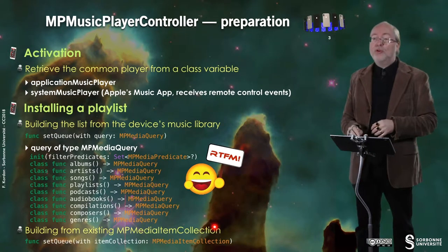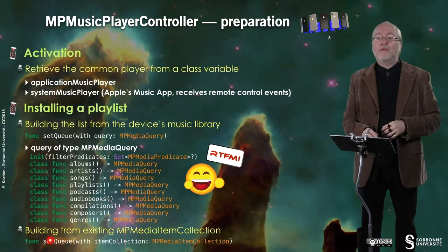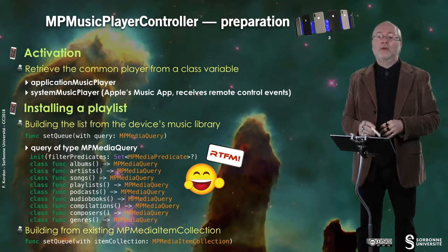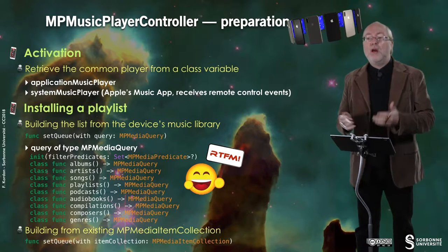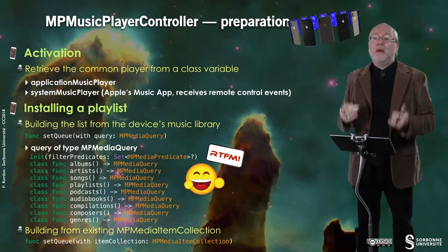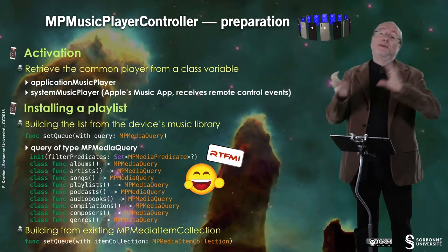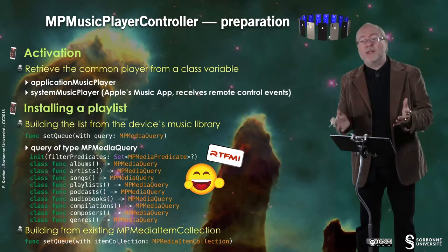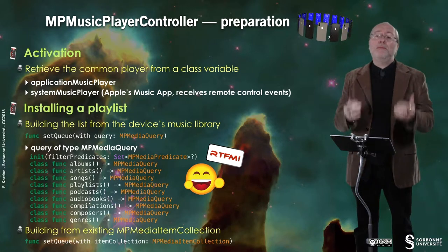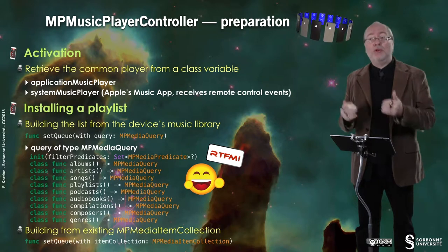The way your tracks will be sorted depends on the way you request them. You can also set the queue from an MP Media Item Collection that you have created yourself, for example by means of an MP Media Picker Controller.